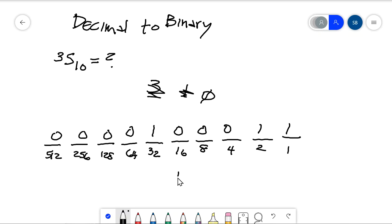And this number that you see here, 1 0 0 0 1 1 is binary representation of 35.